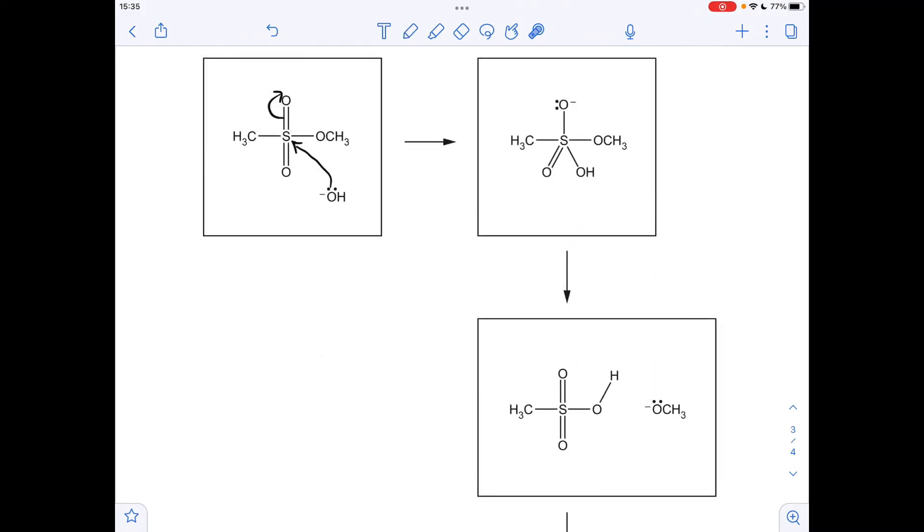So moving on to step two now, so what's different again? Well, we've got the double bond back, so this pair of electrons has come down here to regenerate the double bond. What else has happened? This OCH3 is broken off, and obviously the negative charge is left on the O, so the curly arrow has gone that way.